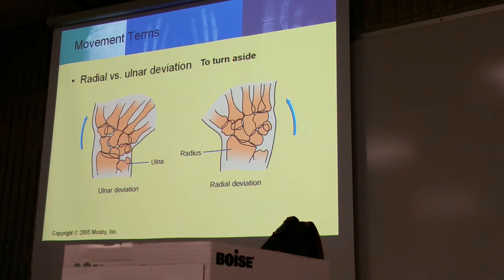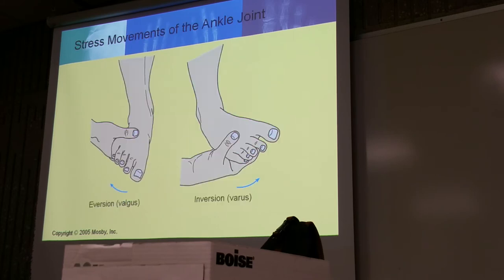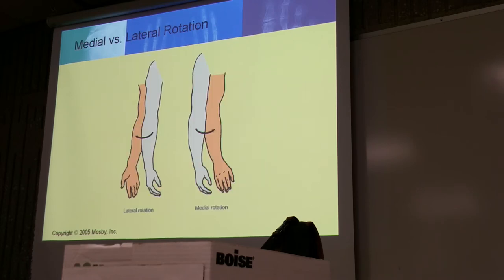We'll talk about ulnar and radial deviation when we talk about the wrist. We'll talk about dorsiflexion and plantar flexion when we're talking about the feet. Same thing here — eversion, inversion. These are terms I'll go through more specifically when we cover that particular body unit.